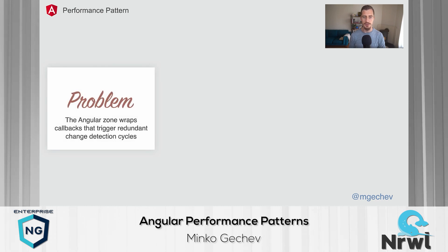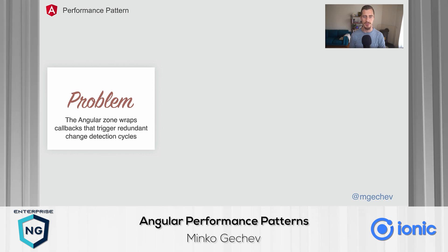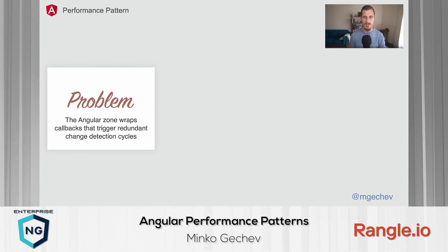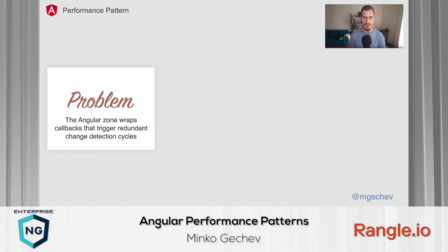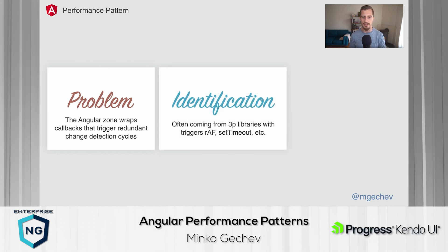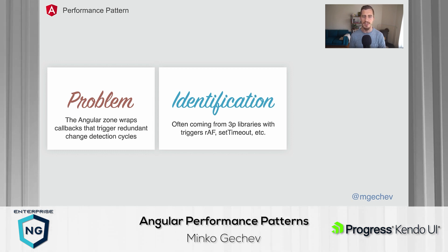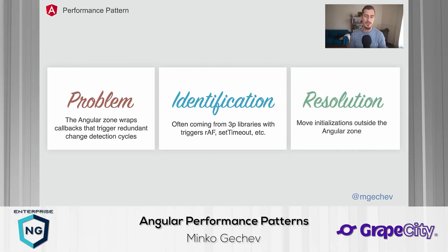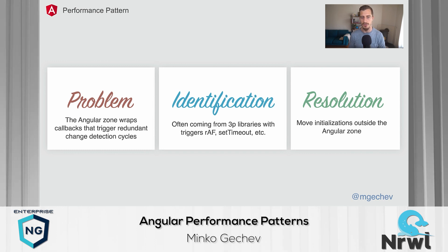The zone pollution pattern occurs when the Angular zone wraps callbacks that trigger redundant change detection cycles. Polluting the zone happens when we run initialization logic that uses requestAnimationFrame, setTimeout, or addEventListener. We can identify the problem by looking for unexpected change detection cycles in the profiler output. In most cases, the reason is requestAnimationFrame. The solution is usually pretty straightforward: all you need to do is move the initialization logic outside of the Angular zone.